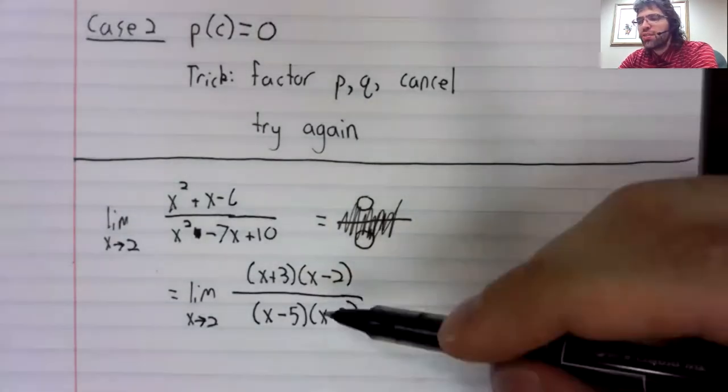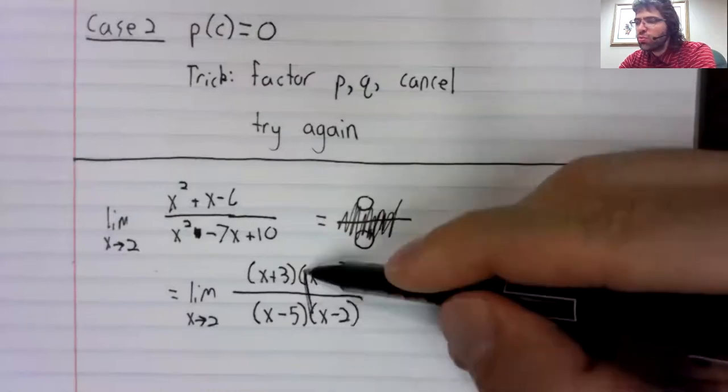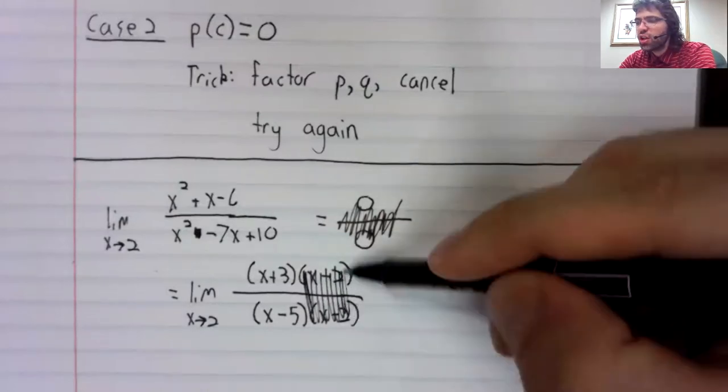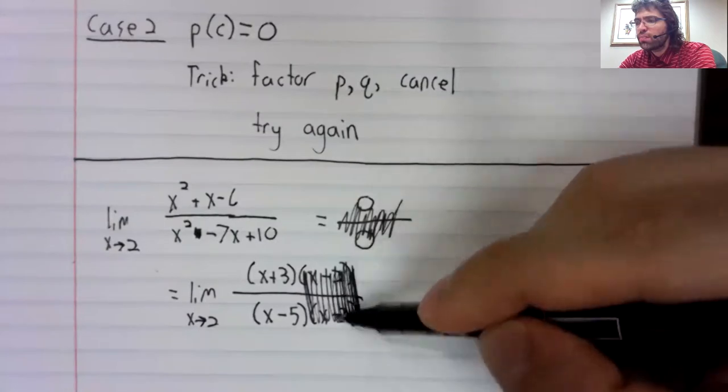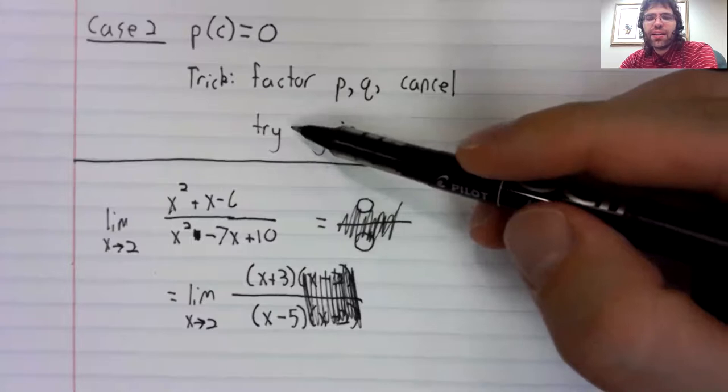And you see cancellation occurs. These x minus two's eliminate each other. And now we'll try again.